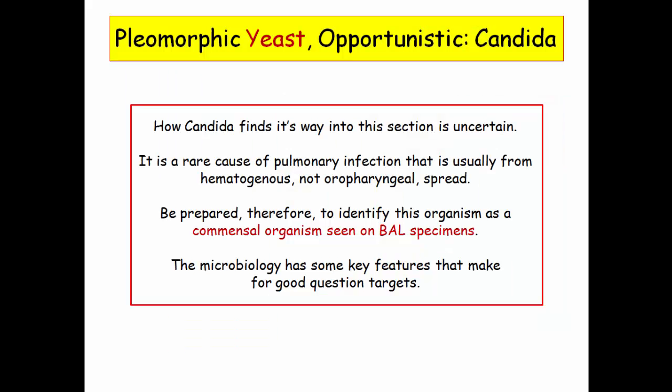For the opportunistic yeast, we have candida. How candida finds its way into this section is uncertain, yet it is traditionally presented with opportunistic pulmonary fungal infections. However, it is a rare cause of pulmonary infection and usually from hematogenous, not oropharyngeal spread. Be prepared to identify this organism as a commensal organism seen on bronchoalveolar lavage specimens, since it readily contaminates these specimens from the oropharynx.